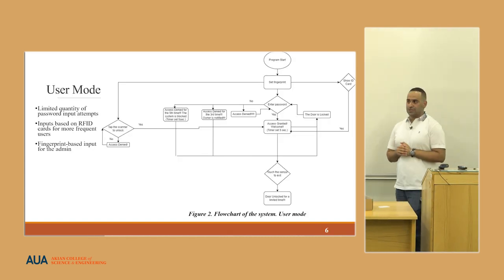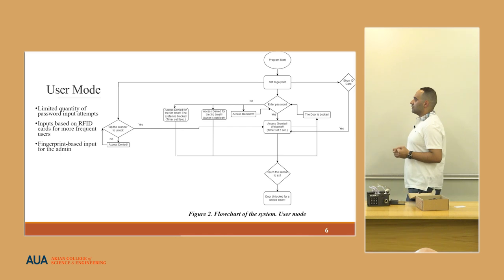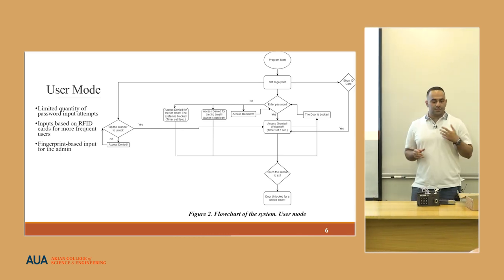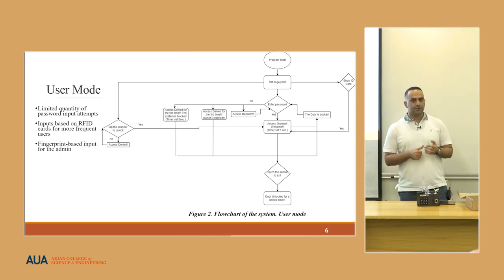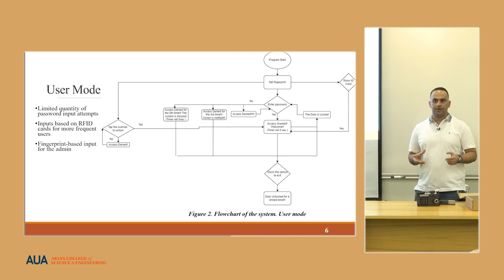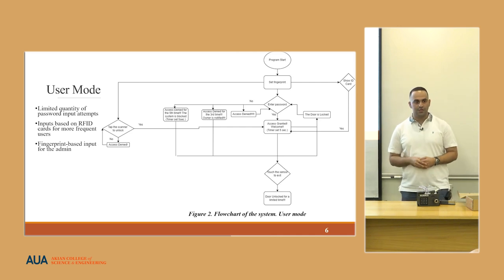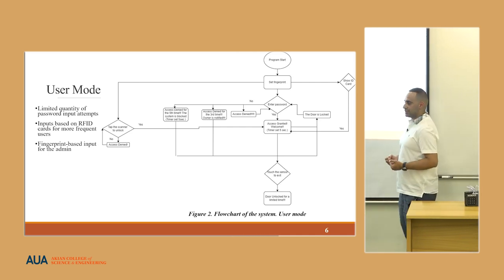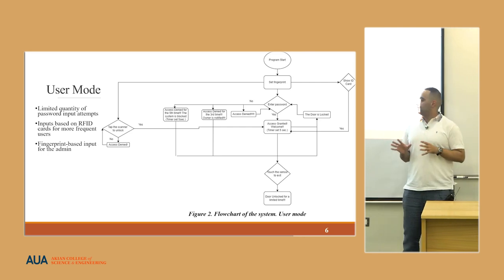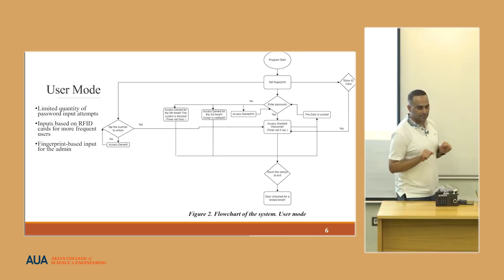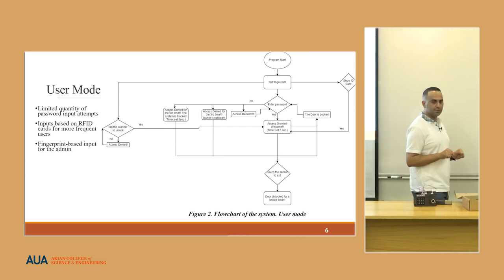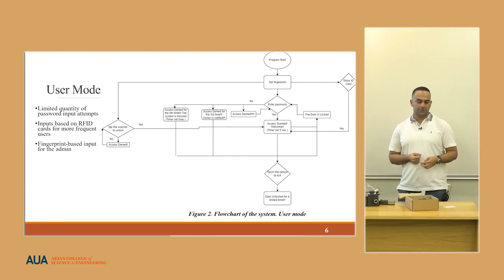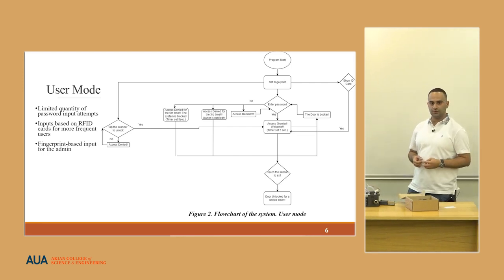The user mode is the main and default mode of our system. It consists of password, RFID, and fingerprint; however, they vary in the number of users. Password-based access is for all users and has a limited number of wrong attempts. In case of a correct attempt, the door is unlocked for a limited time. In case of a wrong attempt, the system doesn't allow you to enter.